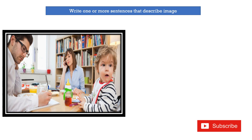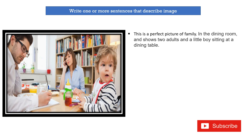The father is working from home, the mother is talking on the phone with someone, and the little one is getting bored in the dining room and wants to go outside and play. So a simple rough idea: 'This is a perfect picture of a family in the dining room and shows two adults and a little boy sitting at the dining table.'